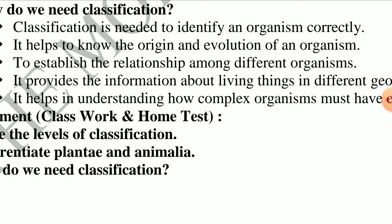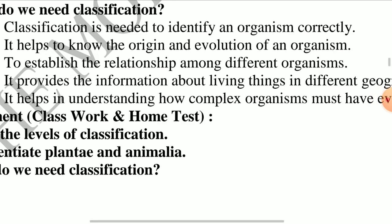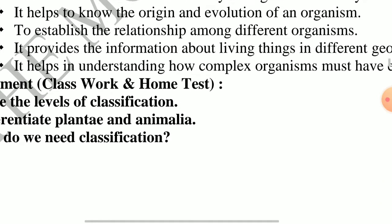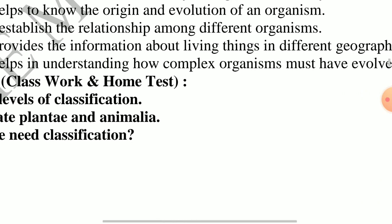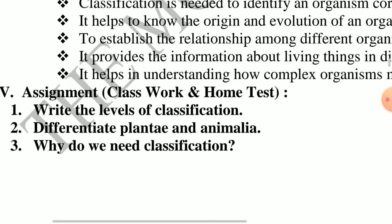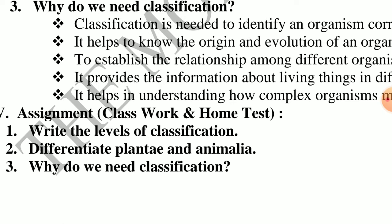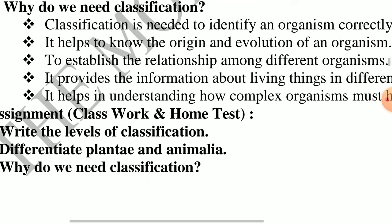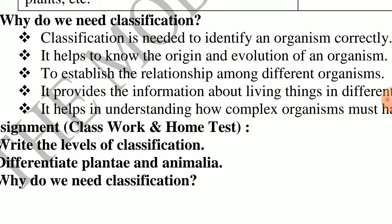It helps to know the origin and evolution of an organism. It provides information about living things in different geographical regions. It helps in understanding how complex organisms must have evolved from simpler ones. Why do we need classification? To identify organisms correctly, to know how organisms evolved, to differentiate between animal groups, and to understand relationships between groups.